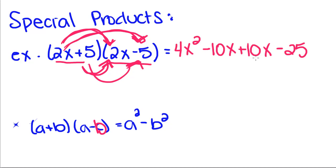So if we combine these like terms, they're going to go away, because a negative 10 plus positive 10 is going to give us 0. So 4x squared minus 25. So that's what this note down here is. Whenever you have two binomials multiplied that come in the form a plus b times a minus b.